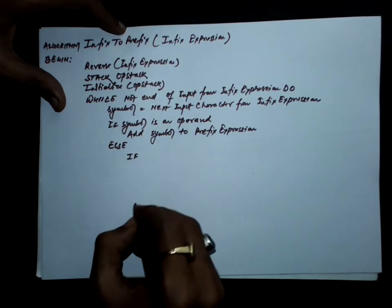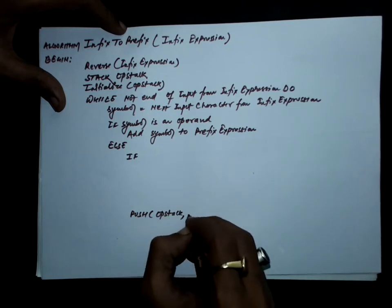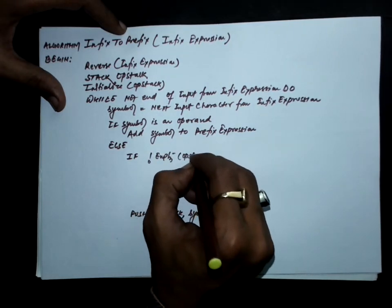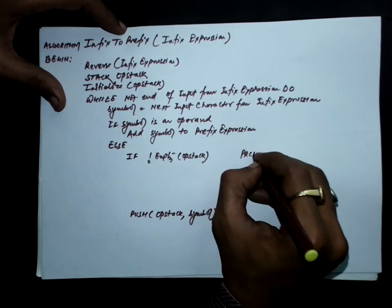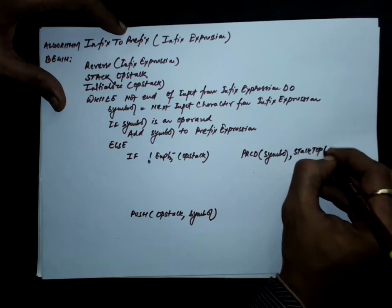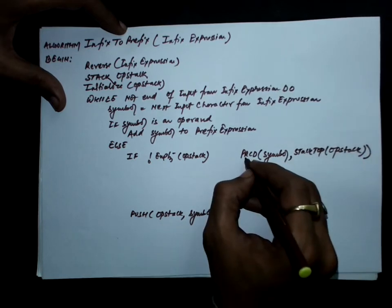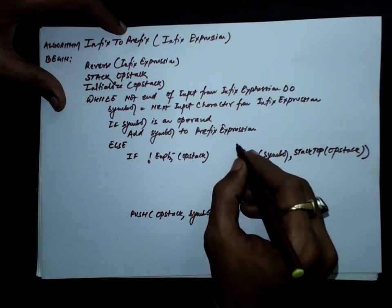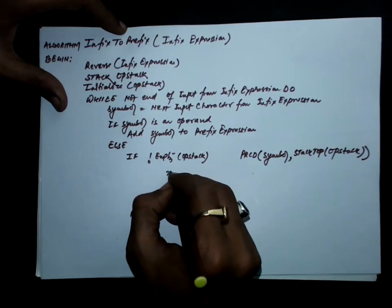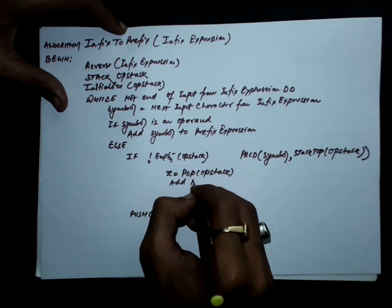If the stack is empty, push this symbol on the OP stack. But if the stack is not empty, we need to check the precedence — checking the precedence of symbol over stack top. If this precedence returns false, we pop the stack and add the popped symbol to the prefix expression.